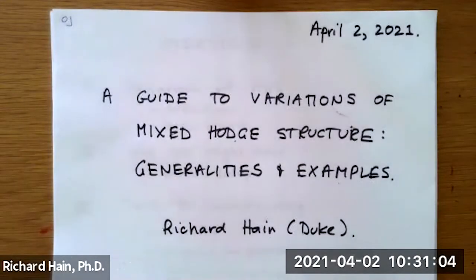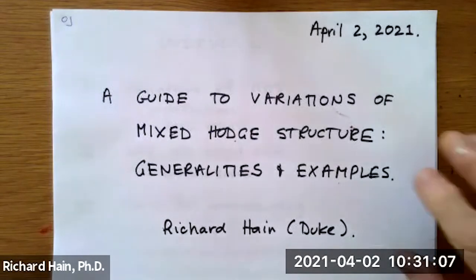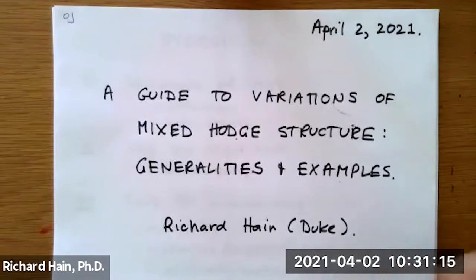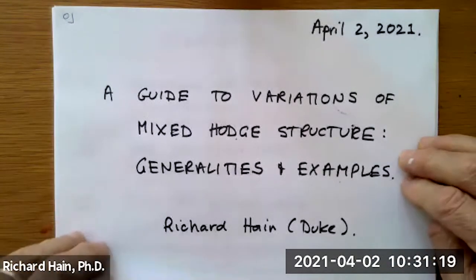Welcome to the second talk of this morning session. It's my great pleasure to introduce Professor Hain, who will talk about a guide to variations of mixed Hodge structure: generality and examples. Good morning everybody, or good afternoon depending on where you are. Thank you for inviting me. I'm going to use paper slides, so I'll switch over to a document camera. I'm going to do examples connected with modular forms rather than a KCB connection.